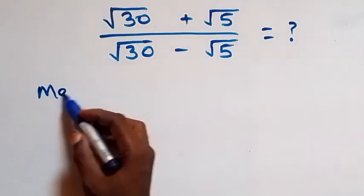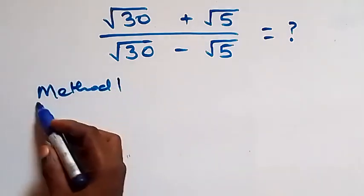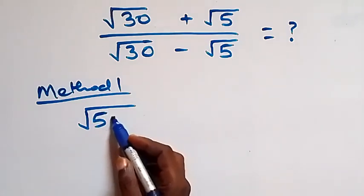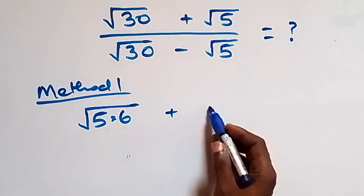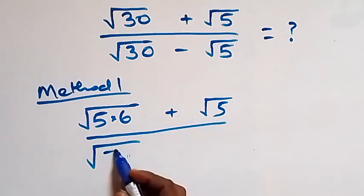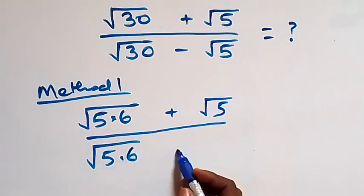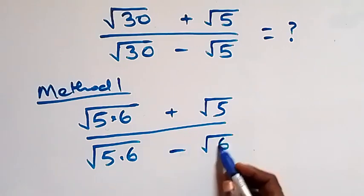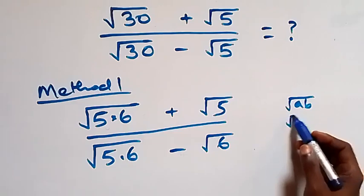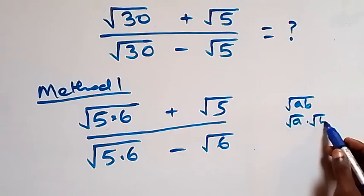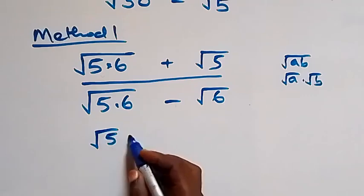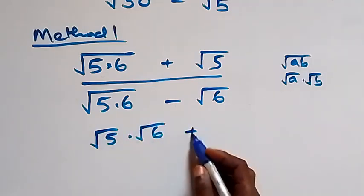For the first method, we can write the numerator as root five times six, then plus root five, and the denominator as root five times six, then minus root five. Using the property that root(a×b) equals root a times root b, we separate these as root five times root six plus root five.